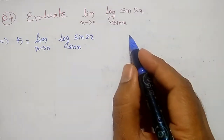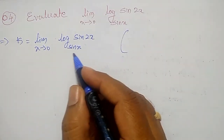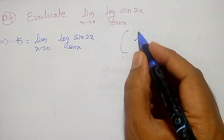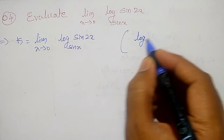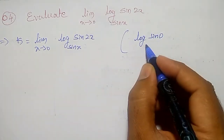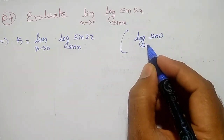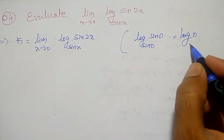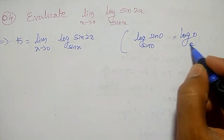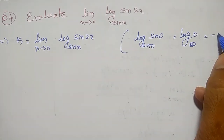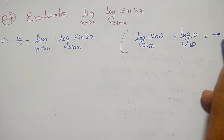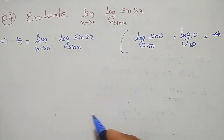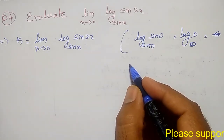Here, let me check in which form it is. At x equal to 0, we will get log of sin 0 and sin 0 here. It is nothing but log 0 to the base 0, which is not defined, or it is minus infinity — not defined at all. To take this in an indeterminate form, I will use the change of base formula.